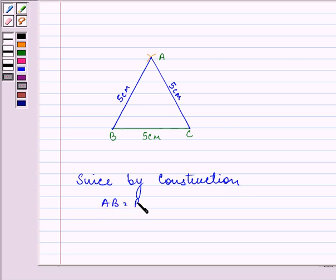equals BC equals CA, that is 5cm each. So a triangle having all sides equal is an equilateral triangle.